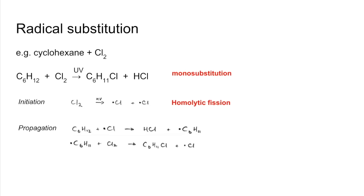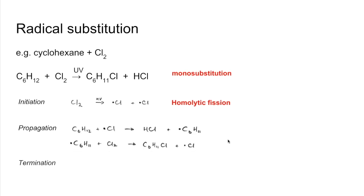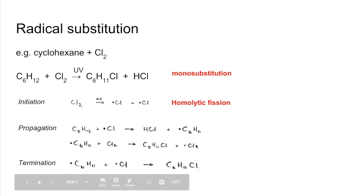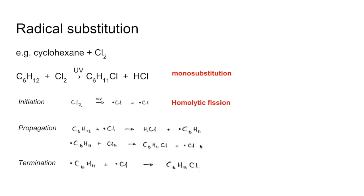The radical just produced feeds into propagation two, where it strips out one of the chlorines and generates the product, leaving a chlorine radical. Finally, termination: you take any two radicals produced in the mechanism and combine them. If chlorine is present in excess, the chlorine radicals reformed in the second propagation step can go on stripping out the next hydrogen, giving another pair of propagation steps, continuing until all the hydrogens have gone.